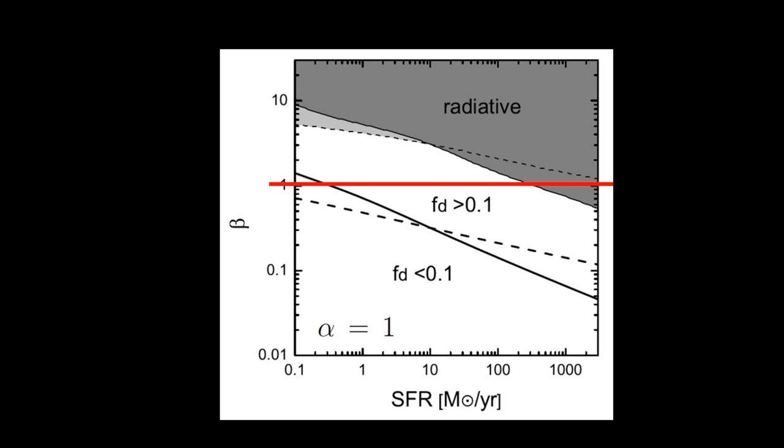For star formation rate greater than 10 solar mass per year, beta should always be less than 1. In this paper, we use different fd, different normalization of the observed correlation between x-rays and their star formation rates. We find very similar results.